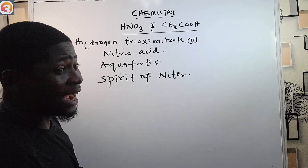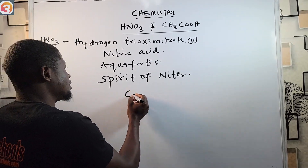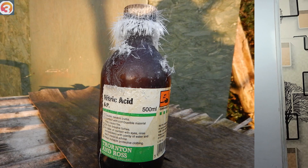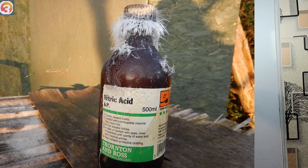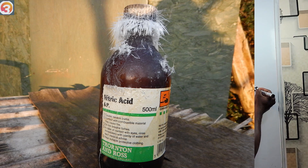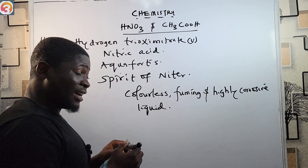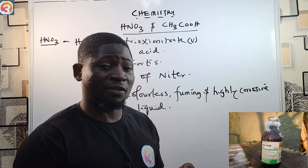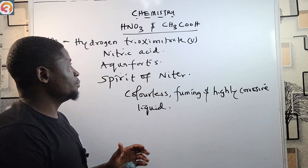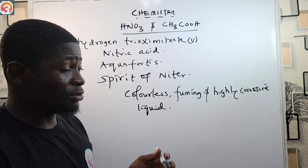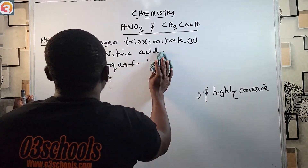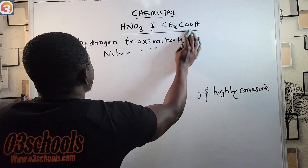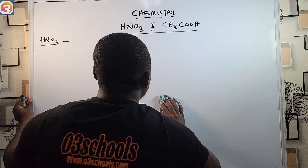HNO3 is a colorless, fuming, and highly corrosive liquid. It is very toxic and can cause severe burns if it comes in contact with your skin — it can rip your skin off. So please be very careful with hydrogen trioxonitrate(V).